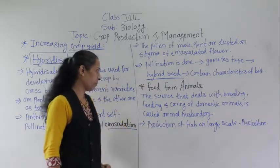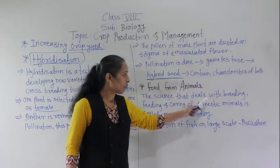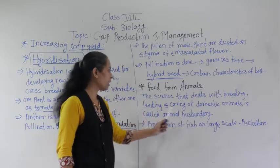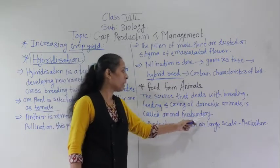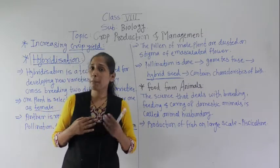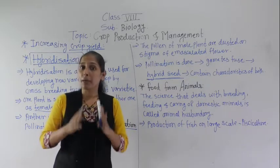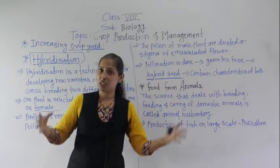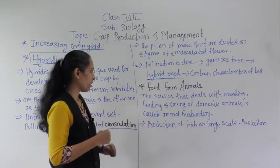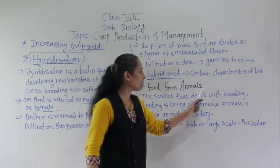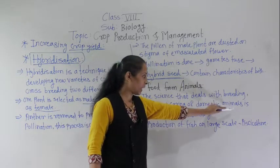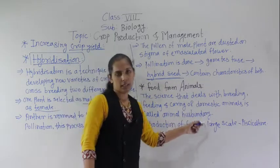The science that deals with breeding, feeding, and caring of domestic animals is called animal husbandry. To get different products from animals on a large scale, we practice animal husbandry. For people living in coastal areas, fish is the main food, and the production of fish on a large scale is called pisciculture.